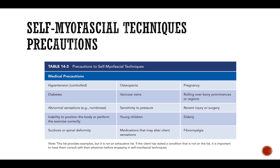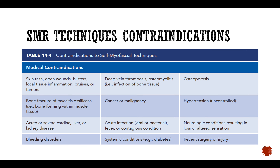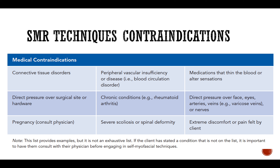Precautions and contraindications for SMR include varicose veins, sensitivity to pressure, elderly clients, medications that alter sensation, skin issues, wounds, osteoporosis, recent surgeries, acute infections, cancer patients — compression near tumor sites can cause issues — connective tissue disorders, and pregnancy. For pregnant clients, too much pressure can cause unwanted stimuli and potentially early-onset labor. Always consult a physician and err on the side of caution.